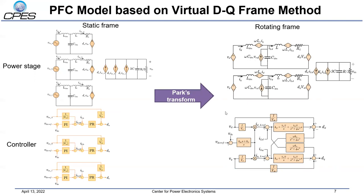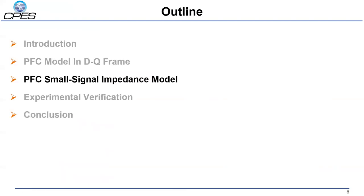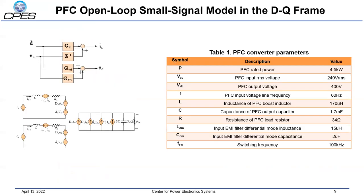This is the circuit model in the DQ frame and this is the controller model in the DQ frame. With the average model in the DQ frame derived, the next part presents the PFC small-signal impedance model in the DQ frame. With the DC operating point in the DQ frame, the converter circuit average model can be linearized, yielding the small-signal model shown here. This is the block diagram format of the small-signal model. To simplify the analysis, this small-signal model does not include the AC-side LC filter, which is added after calculating the converter impedance. The PFC converter with parameters shown in this table is given as an example.